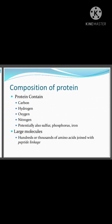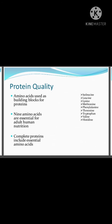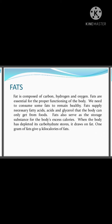Protein is made up of carbon, hydrogen, oxygen, nitrogen, and sulfur. The amino acids in protein are linked together by peptide bonds. The quality of protein depends on the essential amino acids present — if all nine essential amino acids are present, it is said to be a complete protein.